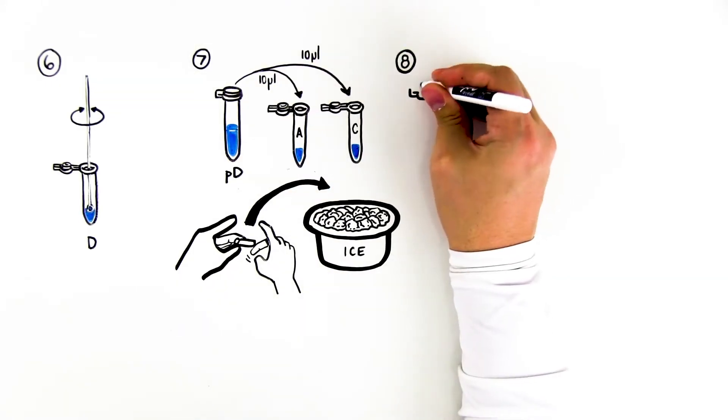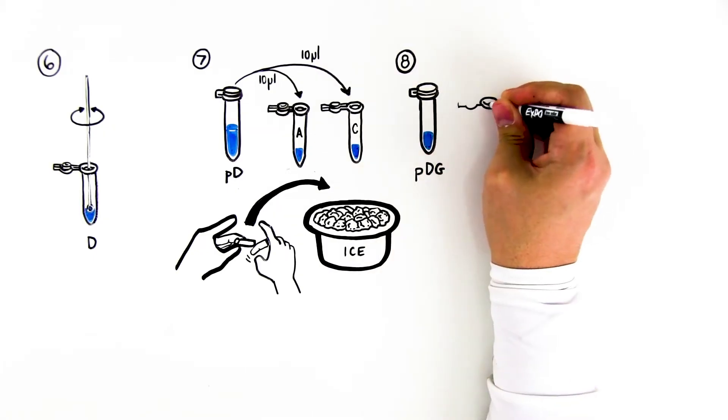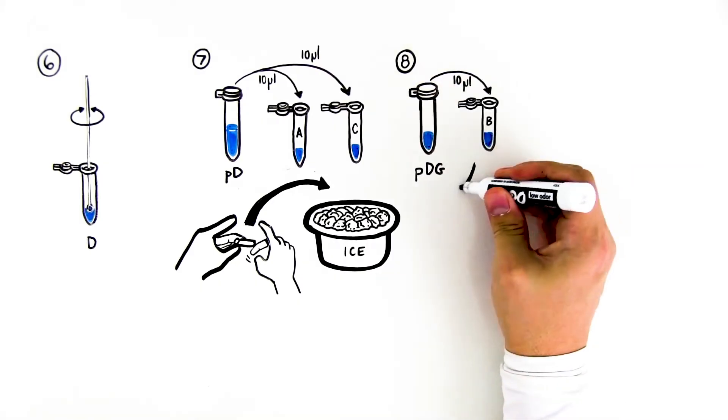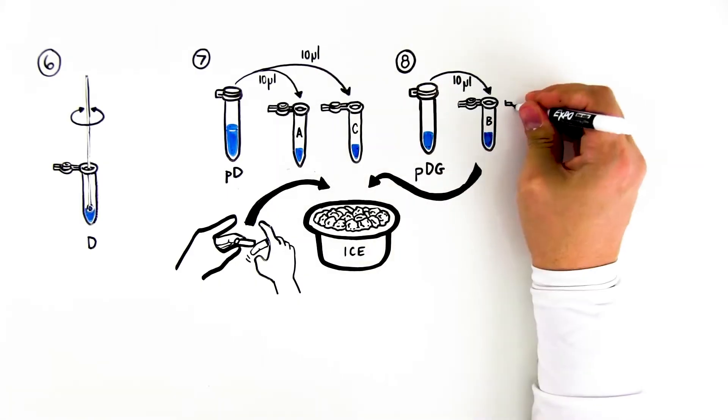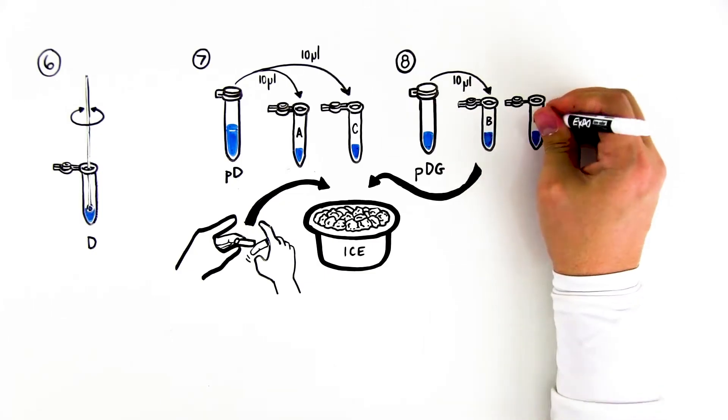Step 8: Using a new pipette tip, add 10 microliters of PLZ donor guide PDG plasmid to tube B. Close the tube, flick three times to mix, and place on ice. Step 9: Using another new pipette tip, repeat with tube D.